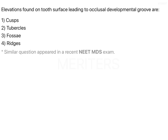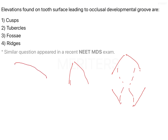When you take a posterior tooth - your molars and premolars - and look at the occlusal surface, you will notice elevations present on both the buccal and lingual surfaces. These elevations converge towards a point where you have a depression. The depression is called a groove, whereas the elevations are called cusps.